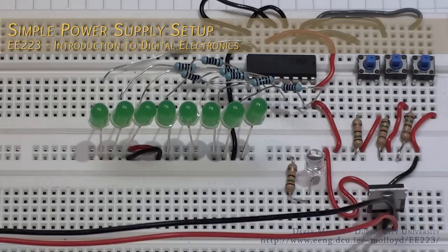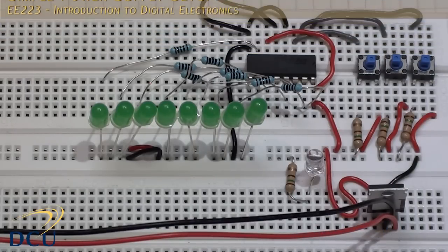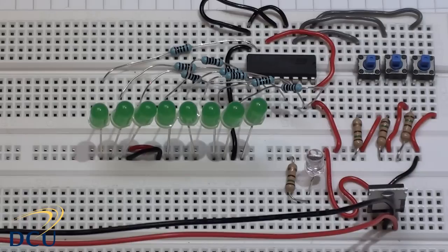This is the circuit I've put together to illustrate the use of the 74HC238. It's a three line to eight line decoder. Before we get started, let's look at the data sheet.